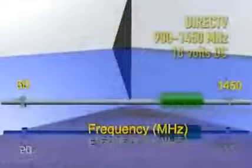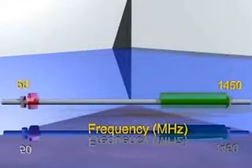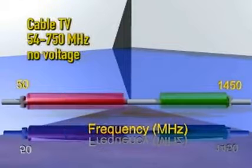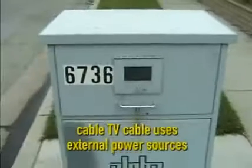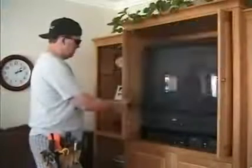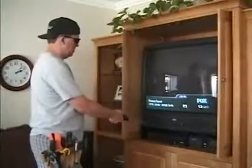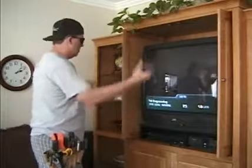Though cable TV has been around a lot longer than direct-to-home satellite service, and both provide programming services, the two are very different. DirecTV generally uses frequencies between 900 and 1450 megahertz and passes voltage to power the LNBs. Cable TV generally uses frequencies between 54 megahertz and 750 megahertz and never passes voltage. This is because external power supplies throughout the cable system power all active cable components. These lower frequencies and the lack of voltage on the cable allow a cable TV company to use cable that may not work well in one of our installs.